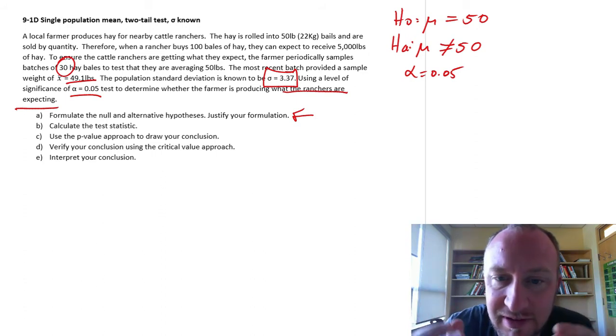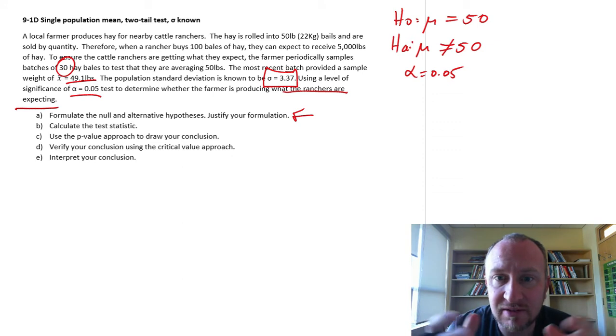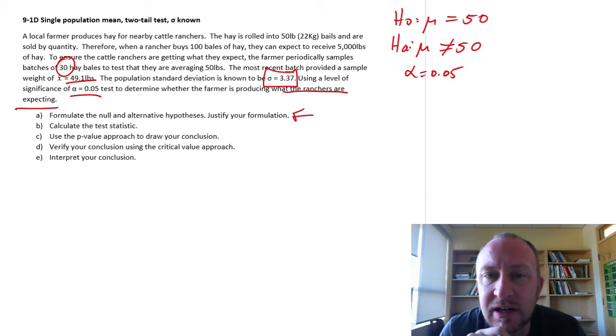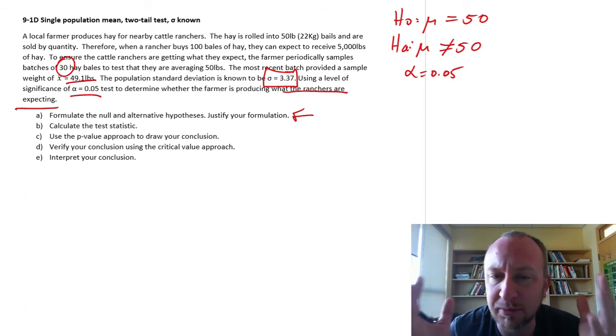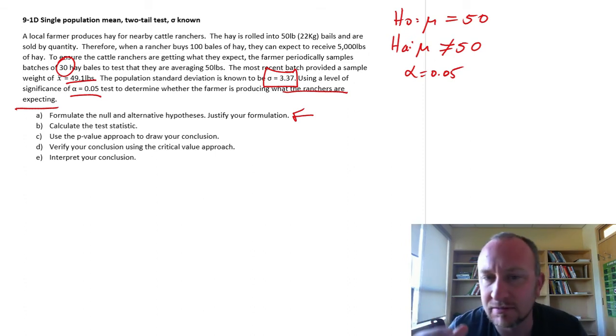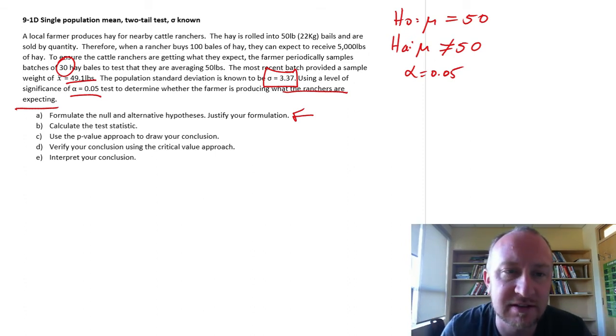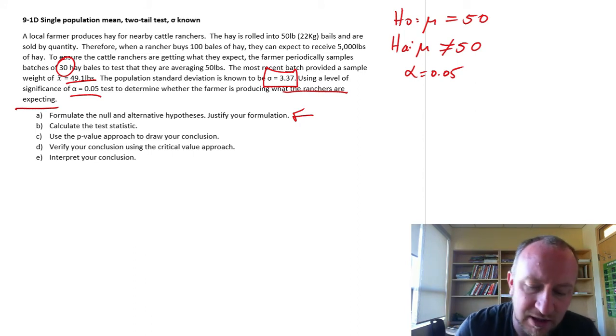If our evidence supports the null hypotheses, then I can be comfortable that we're not deviating from our goal of 50 pounds. If the evidence supports the alternative hypotheses, then we have a problem and we should look into taking some course of action to fix this problem.